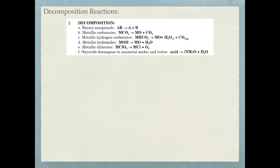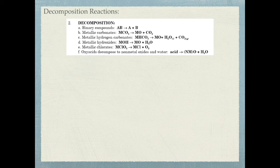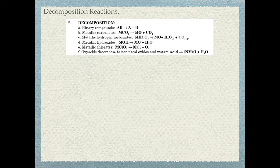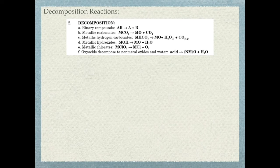For 2E, a metal with chlorate MCl O3 breaks apart into MCl and O2. For 2F, an acid breaks into a non-metal oxide and water — the reverse of the 1C synthesis reaction. Types 2A, 2D, and 2F you've already seen. The compounds you'll need to cross charges for include: MCO3, MO, MHCO3, MOH, MCl O3, and MCl — highlight those because when creating those compounds you need to cross your charges.